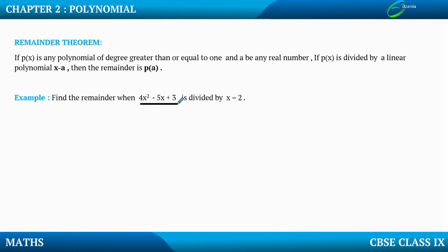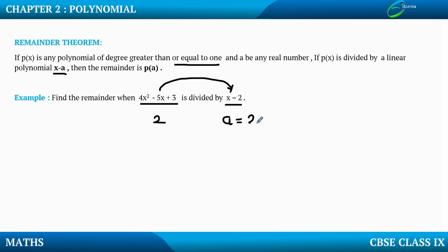Here is one more example: find the remainder when x² - 5x + 3 is divided by x - 2. The degree of this polynomial is 2, which is greater than or equal to 1. Since the divisor is x - 2, that is x minus a, the value of a is 2. Therefore by the remainder theorem, the remainder is p(2). If it were x - 3, then p(3) would be the remainder; if x - 4, then p(4) would be the remainder.